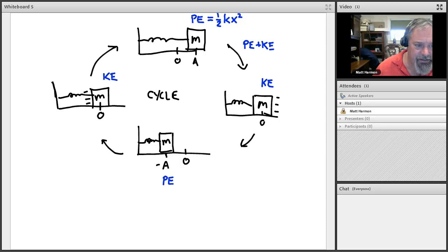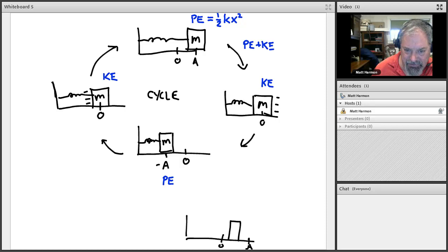Let's go ahead and draw what the system would look like if it was somewhere in between. That would probably have the mass somewhere between the origin and point A. So the mass might be here somewhere and the spring would be not quite as stretched as it was in the first drawing, but the mass would be moving, but maybe not quite as fast. So this is a situation that represents a mixture of potential and kinetic energy.